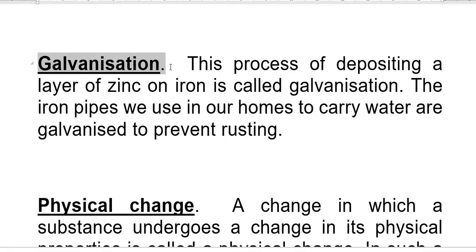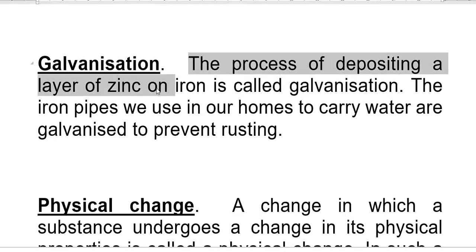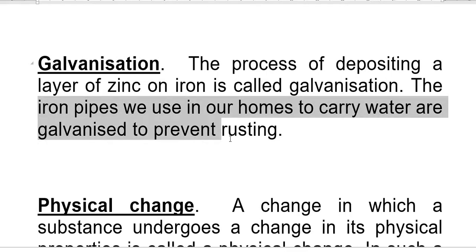Galvanization is a process in which we deposit a zinc layer on iron to prevent rusting. This process of depositing a layer of zinc on iron is called galvanization. The iron pipes we use in our homes to carry water are galvanized to prevent rust.